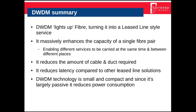In summary: DWDM lights up fibre and turns it into a leased-line-style service. It massively enhances the capacity of a single fibre, enables different services to be carried at the same time and between different places, reduces the amount of cable and duct required, and — because there's no electronics processing — it also reduces latency compared to other leased-line-type solutions.